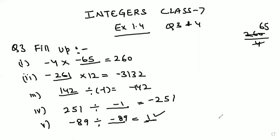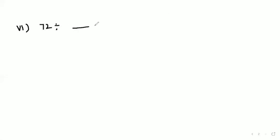Moving to the sixth part: 72 divided by what number so as to get minus 1? 72 is divided by minus 72 to get minus 1.